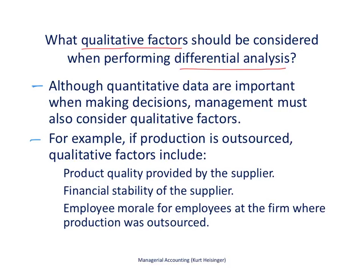In the first bullet point, although quantitative data is important when making decisions — we certainly don't want to ignore quantitative data — we also have to consider qualitative factors. Here are some examples we should take a look at if production is outsourced. If we're considering outsourcing production instead of making our products internally, and the numbers point to the idea that it's cheaper to outsource, there are some qualitative factors we should keep in mind.